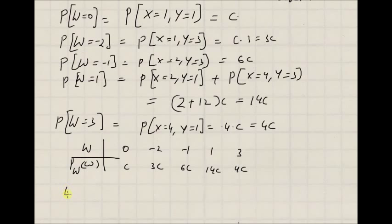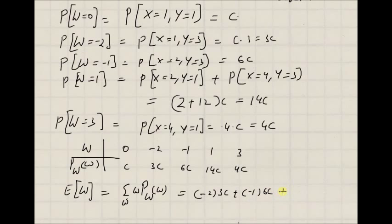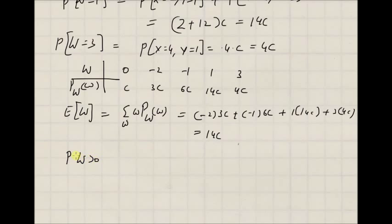Now from this, we can calculate the expected value of w. That is, expectation of w, which is equal to the summation of all values of w times the probability mass function of w, which is equal to 0 times c, plus minus 2 times 3c, plus minus 1 times 6c, plus 1 times 14c, plus 3 times 4c, which is equal to 14c. We can also calculate the probability of an interval, that is probability of w greater than 0. This should be equal to probability of w equal to 1 plus probability of w equal to 3, since these are the only values satisfying w greater than 0. We know that for w equal to 1 the probability is 14c, and for w equal to 3 it is 4c, so the sum is 18c.